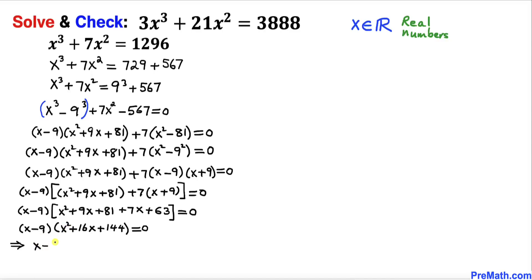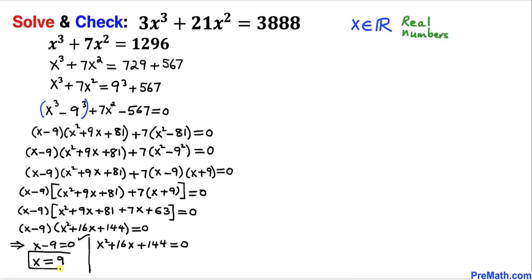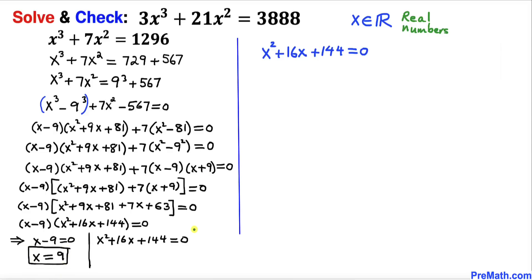Now let's separate these two factors. The first one is x − 9 = 0, which gives us x = 9. That is one of the solutions to this cubic equation.